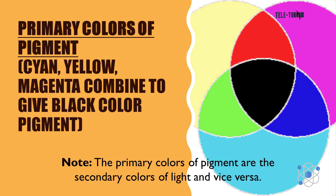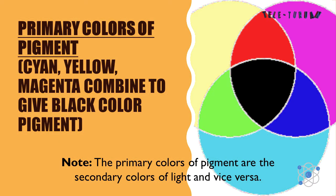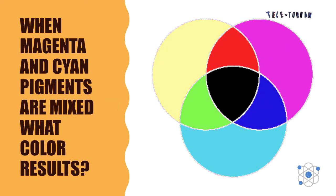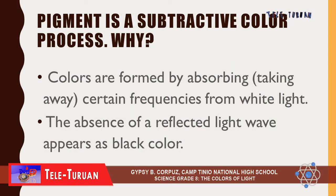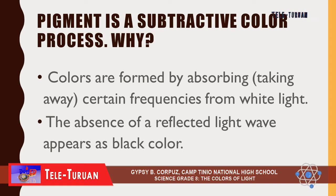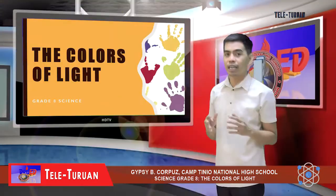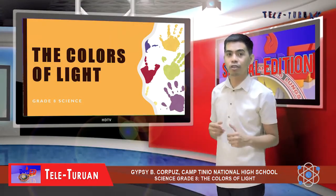Primary colors of pigments include cyan, yellow, and magenta, and when they combine, they give black. The primary colors of pigment are the secondary colors of light and vice versa. When magenta and cyan pigments are mixed, what color results? Pigment is a subtractive color process, because colors are formed by absorbing or taking away certain frequencies from white light. The absence of reflected light appears as black. Applications are painting and printing.